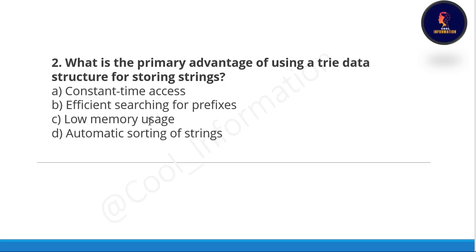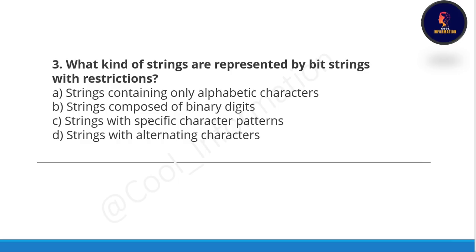Next question: what is the primary advantage of using a trie data structure for storing strings? Option A is constant time access, option B is efficient searching for prefix, option C is low memory usage, and option D is automatic sorting of strings. Option B is correct — efficient searching for prefix is the primary advantage.